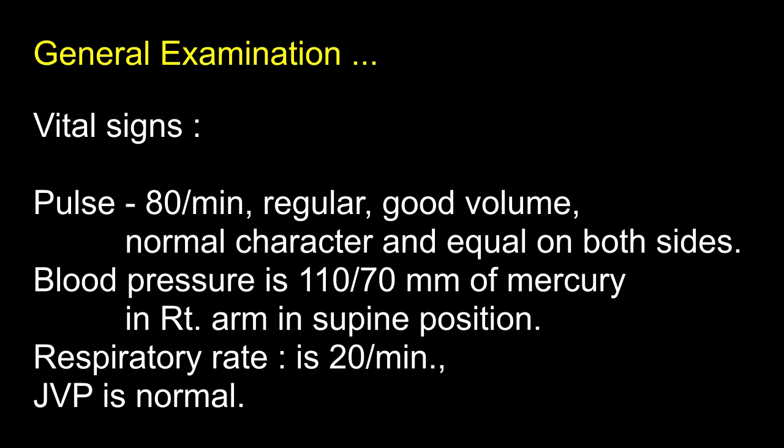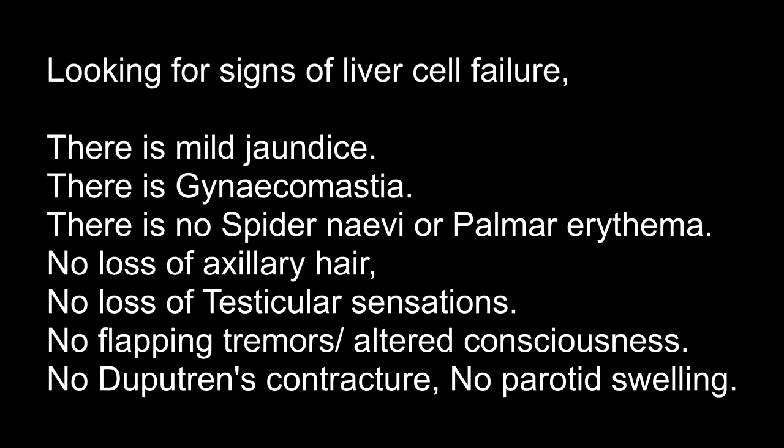Vital signs: pulse is 80 per minute, regular, good volume, normal character and equal on both sides. Blood pressure is 110/70 mmHg in the right arm in supine position. Respiratory rate is 20 per minute. Jugular venous pressure is normal. Looking for signs of liver cell failure: there is mild jaundice, there is gynecomastia, no loss of axillary hair, no spider naevi or palmar erythema.